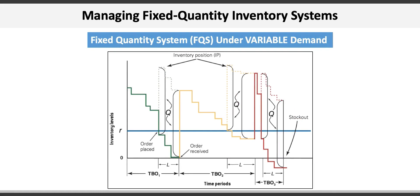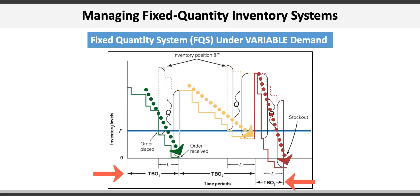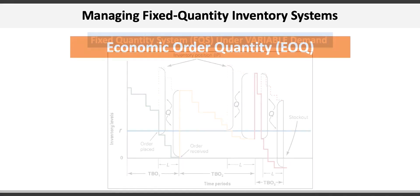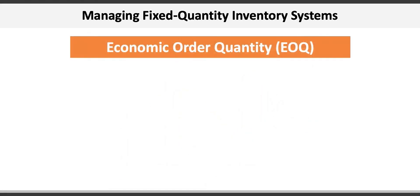Under variable demand, the drawdown of inventory is different each period, resulting in reaching the reorder point at different times. Therefore replenishment orders are also placed at different times. The time between orders and lead time can be very different every cycle, and because demand is not predictable, stockouts can occur.